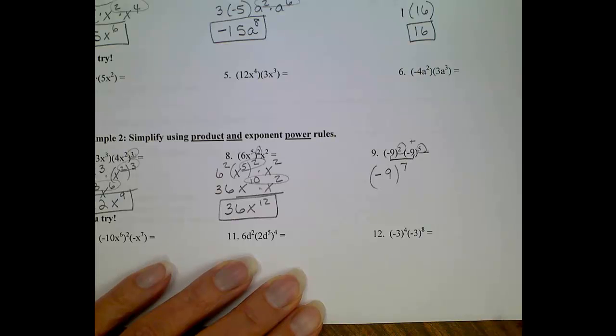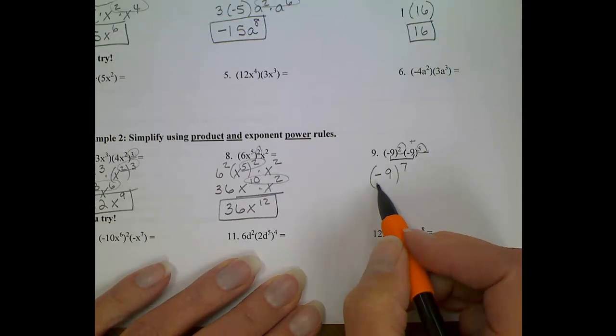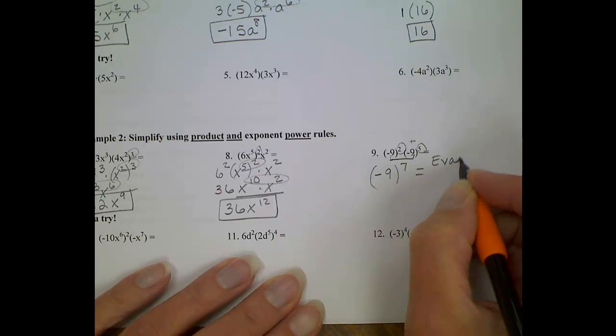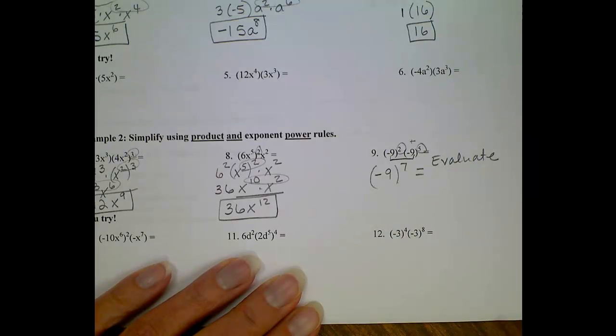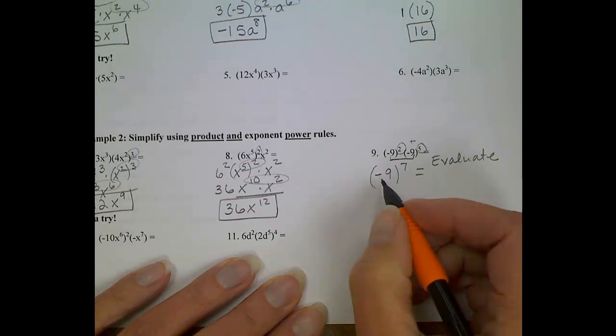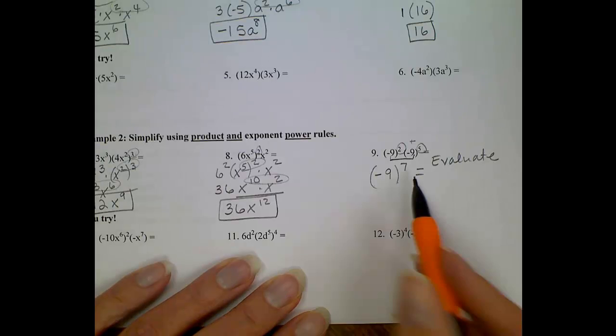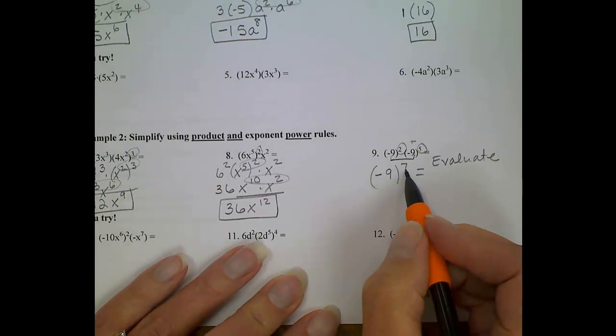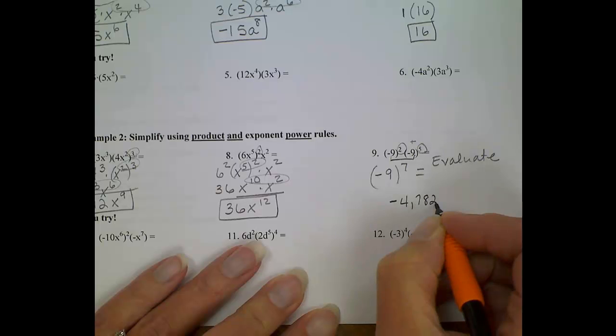Now, sometimes you'll just be asked to simplify the problem, and negative 9 to the 7th power, as long as this is in parentheses, is okay. Sometimes they will ask you to evaluate. And if they do, you have to actually plug that number into the calculator. Always use your parentheses, because it could come out positive, could come out negative. It's going to depend on what we're raising our powers to. In this case, since you're raising a negative number to an odd power, your answer should be negative. I believe what we get, final answer, negative 4,782,969.